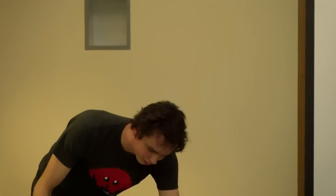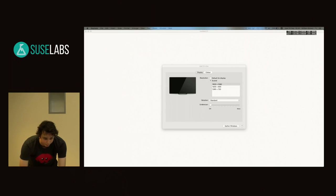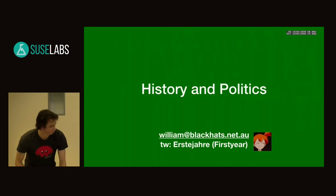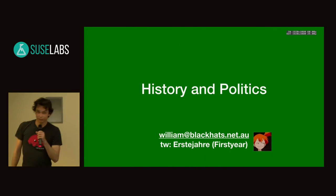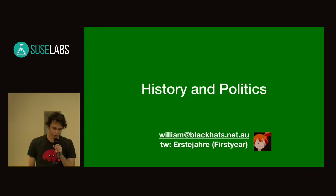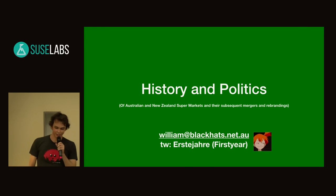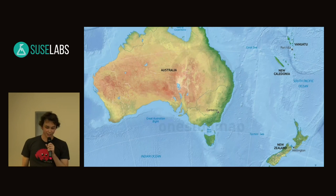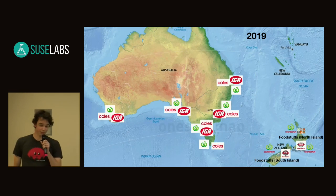Next up we have William Brown, who's also on my team — works on directory services. Normally I work on directory services, but that is not what I'm here to talk about today. I'm here to talk about the history and politics of Australia and New Zealand supermarket chains and their subsequent mergers and rebrandings. This is Australia, and this is New Zealand. And we have supermarkets, believe it or not. Australia has a supermarket duopoly — Coles and Woolworths — and New Zealand has a few major brands of its own: Countdown, New World, and things like this.